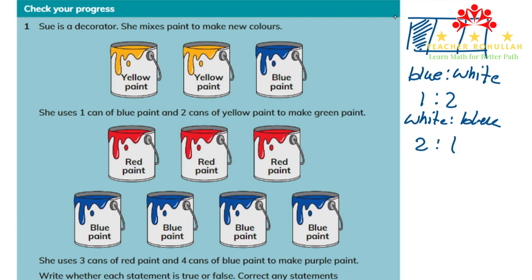We have to keep in mind the order of the ratio. When we first say blue, we have to write the number for blue first. When we say white, we have to write the number for white first. In this diagram, we have three equal parts. When we are talking about ratio, we compare part with part.